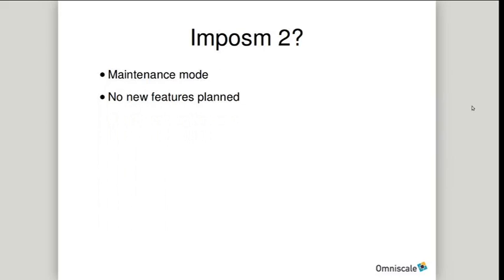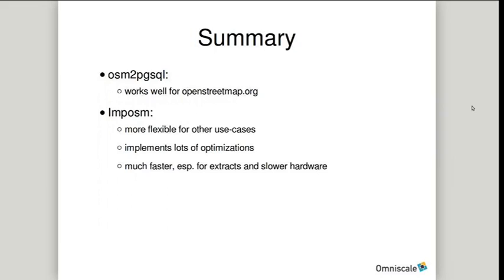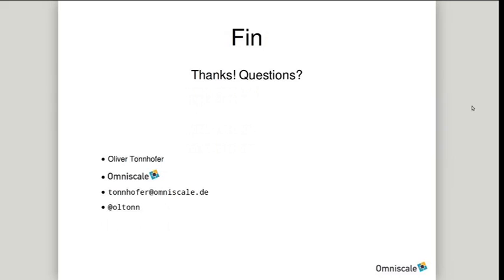Short summary: OSM2PGSQL works well for OpenStreetMap.org, but for us it didn't work well because we needed more flexibility. We wanted to implement optimizations especially for rendering, and we needed software that was faster, especially for mid-sized extracts on mid-sized hardware. That's Impossum. Thank you very much, and I think we have time for questions.